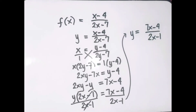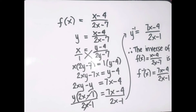This gives us y equals 7x minus 4 over 2x minus 1. We put the negative 1 power on f as a representation that this is the inverse function. Therefore, the inverse of f of x equals x minus 4 over 2x minus 7 is 7x minus 4 over 2x minus 1.